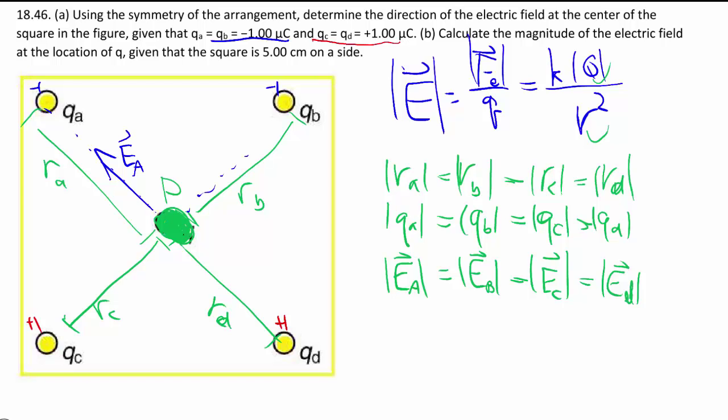Over here, same thing, there's also a negative charge. It's going to be the exact same size. Now we move on to C. C is a positive charge, so it goes away from it. But it's still the same size as the other two because it's the same charge and the same distance away. Same thing with D.